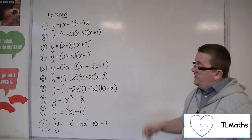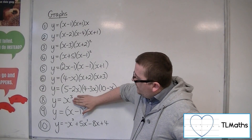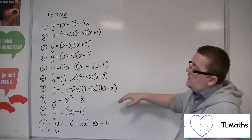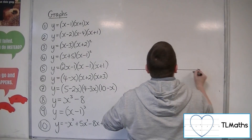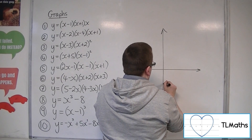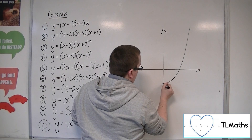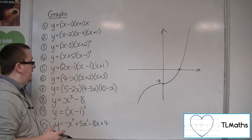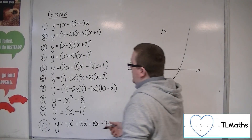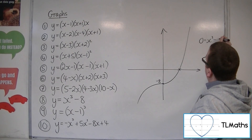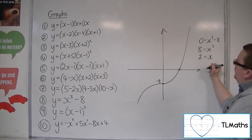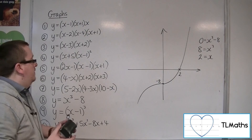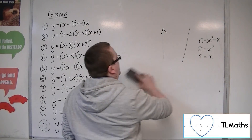Number 8: y is equal to x-cubed minus 8. We know what y equals x-cubed looks like, so y equals x-cubed minus 8 must be the same graph but translated down — each of the y-coordinates has lost 8. So the curve looks like y equals x-cubed, just a translated version. The y-intercept is at minus 8. The only other point of interest is where it crosses the x-axis: setting y to 0, we get x equals 2.